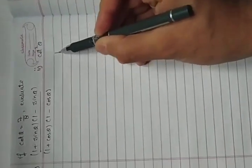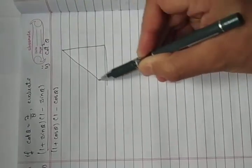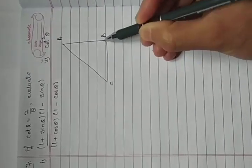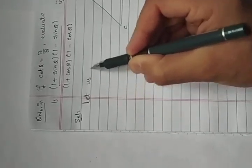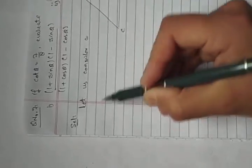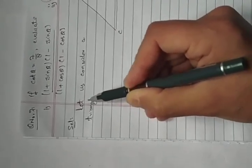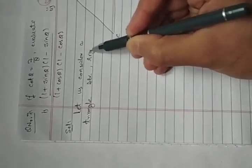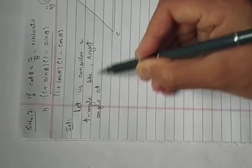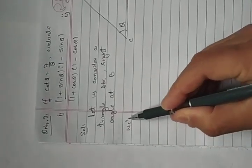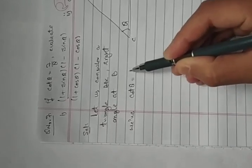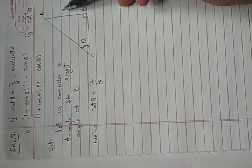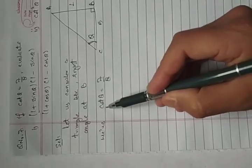Let us consider a triangle ABC, right-angled at B. We have angle theta at vertex A. We are given that cos θ is equal to 7 divided by 8.